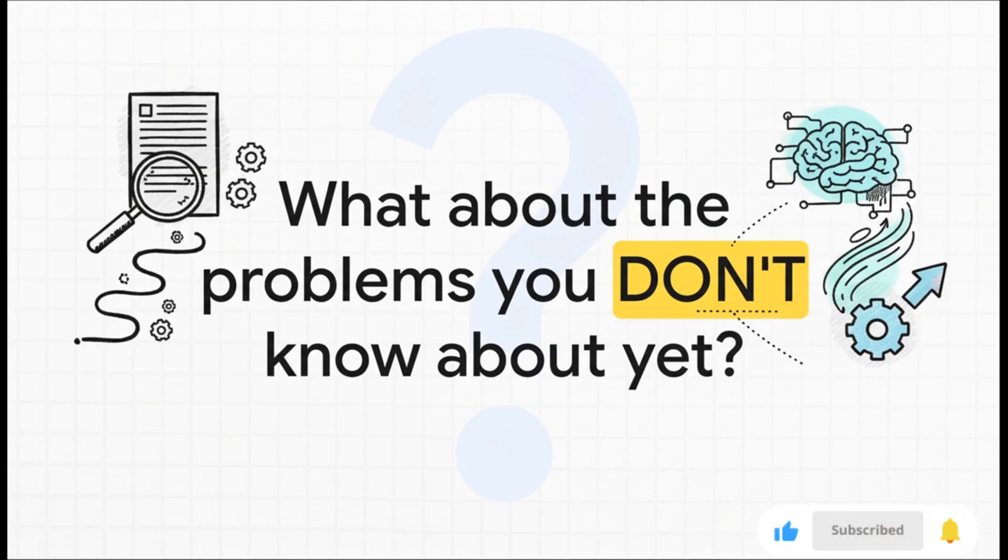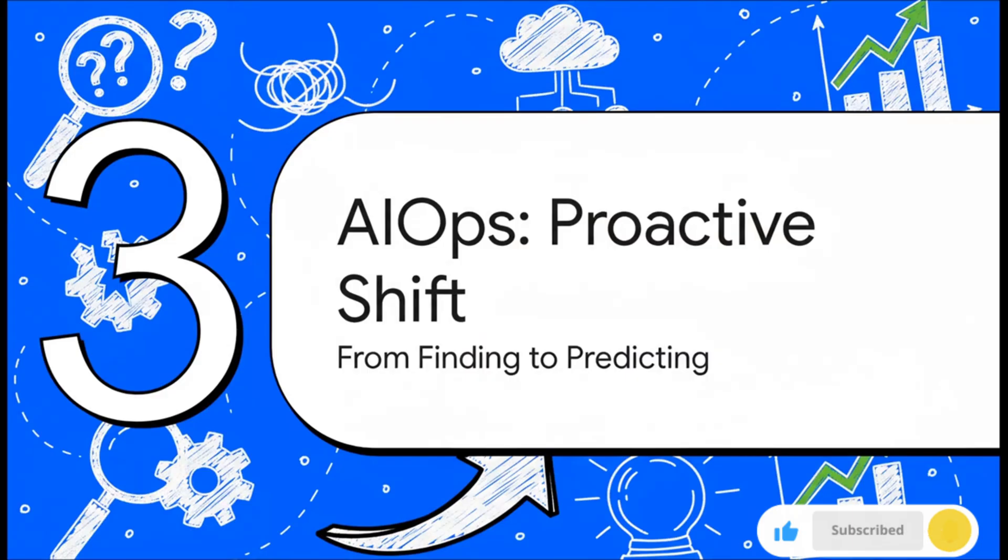And that really is the million-dollar question, isn't it? What about all those problems you don't know about yet? The really subtle, slow-burning ones, you know, like a gradual memory leak that just gets logged as an info message, or a database query that's getting just a little bit slower every hour, logged as a warning? Your traditional script is completely blind to these ticking time bombs because they don't scream error.